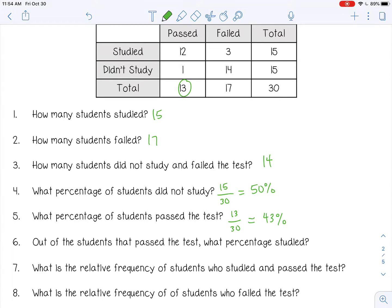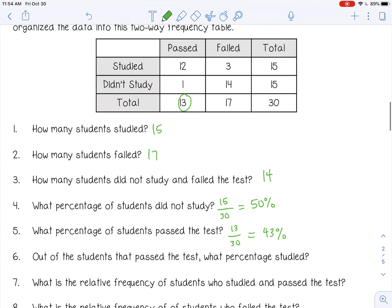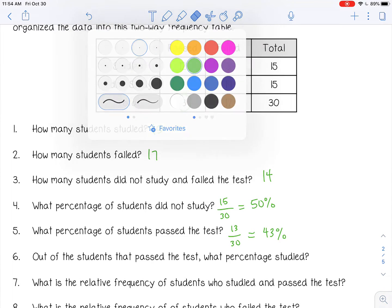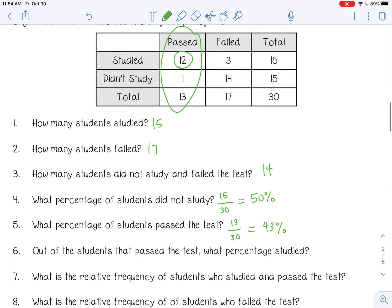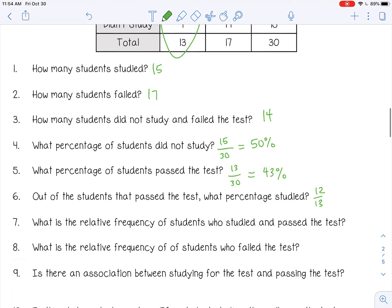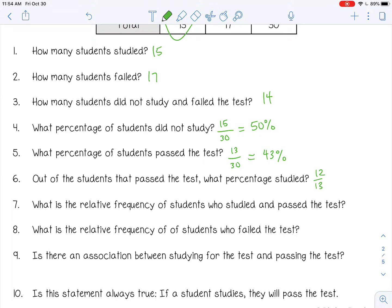Out of the students that passed the test, what percentage studied? Be careful with the wording on this one. Out of the students that passed the test, we're only worried about these. What percentage studied? So 12 studied out of 13 that passed the test. So 12 divided by 13, that gives us 0.92 or about 92%.